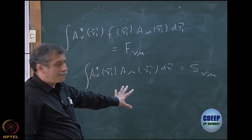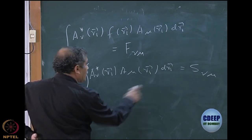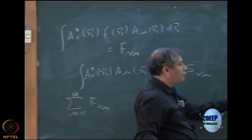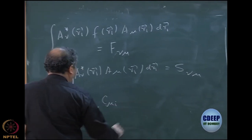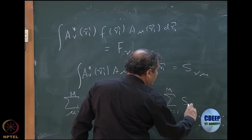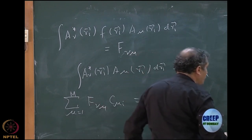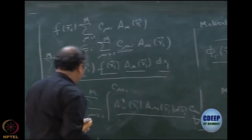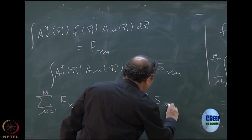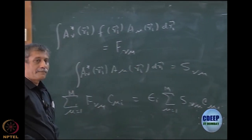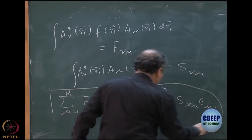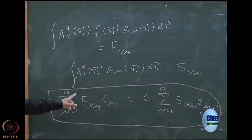Similarly, let me define A nu star R1, A mu R1, DR1 as a matrix of S nu mu. S is basically overlap matrix, overlap between two basis functions. If you do this, then your equation becomes sum over mu equal to 1 to M, F nu mu. So whole thing is now F nu mu matrix C nu I equal to epsilon I sum over mu S. Actually I should have written this also inside here, because this is sum over mu. So C mu I should go inside this integration. So you have S nu mu C mu I.